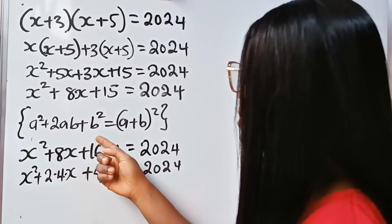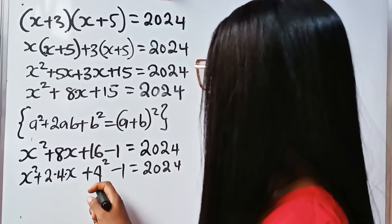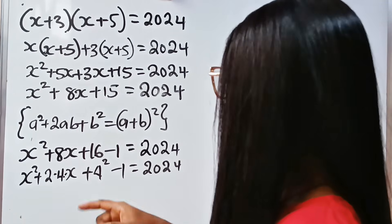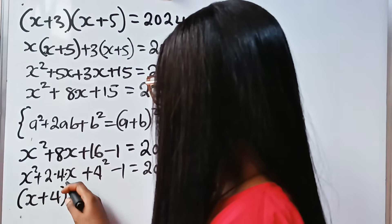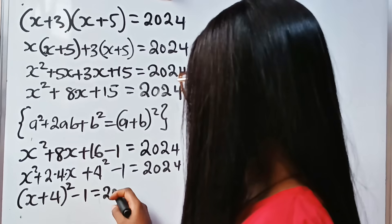Comparing this now, you can see our a is x and our b is 4. So we can write this as (x + 4)² - 1 = 2024.